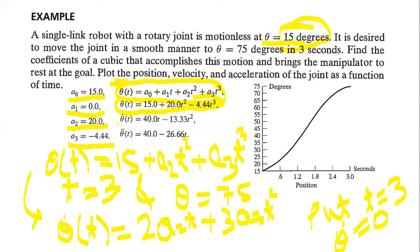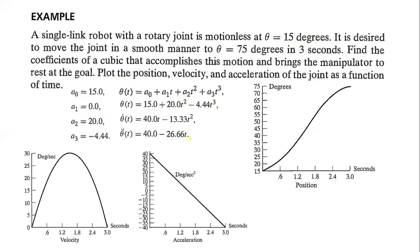Taking the first derivative gives velocity: theta-dot equals 40t minus 13.33t². Taking the second derivative gives acceleration: theta-double-dot equals 40 minus 26.66t. Plotting these equations gives the position, velocity, and acceleration profiles of the joint.